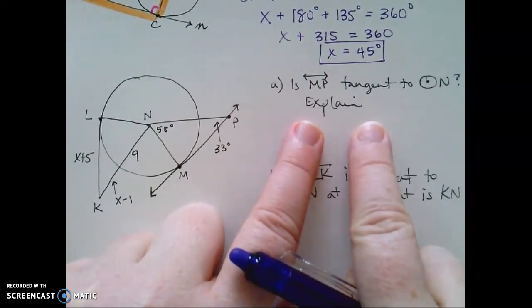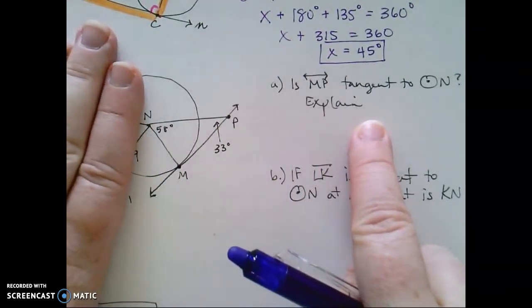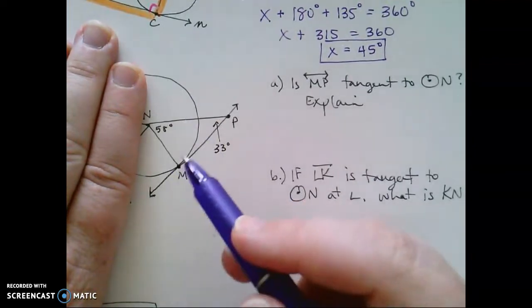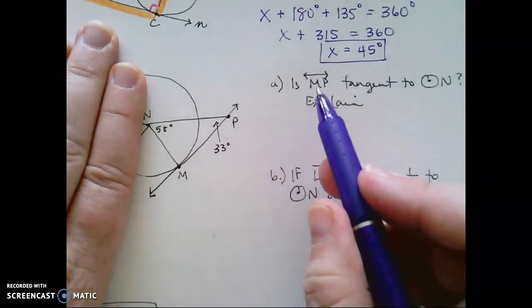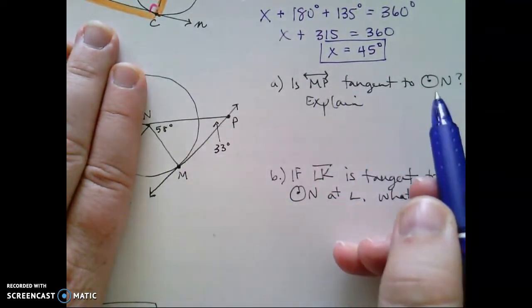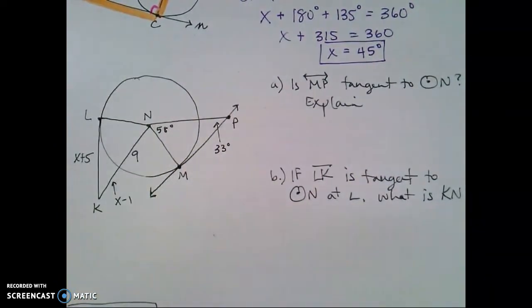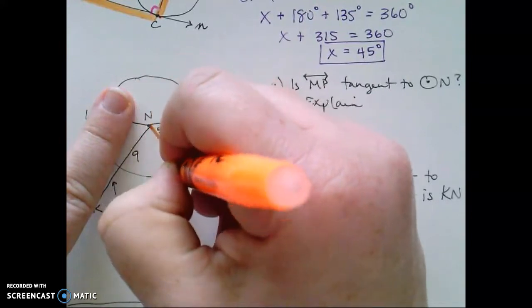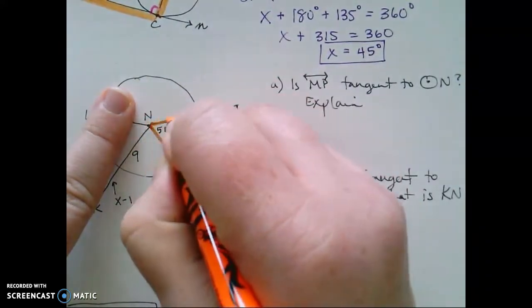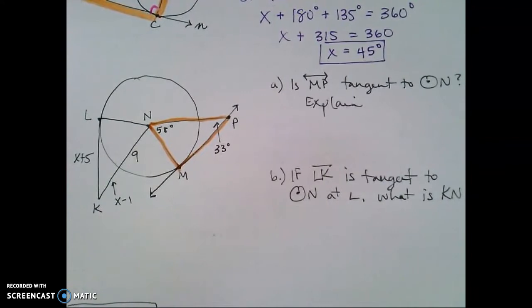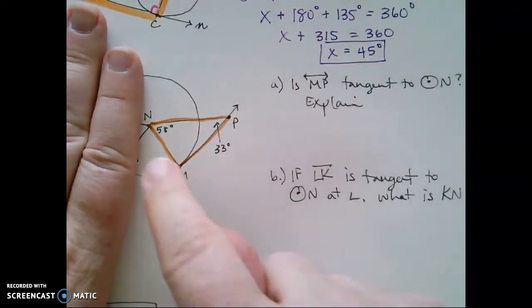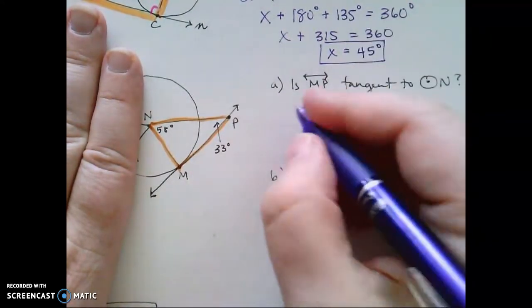Is line MP tangent to circle N? So I don't need to focus on this part of the figure. I only need to look at this. Is MP tangent to circle N? Well, if I take a look at the figure that I'm given, I have a triangle. And similar to our previous problem, I know that the three angles in the triangle have to add to 180.